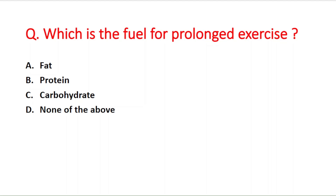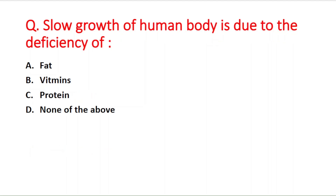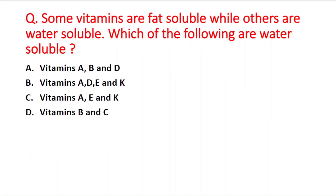Next question: slow growth of the human body is due to deficiency of — option A fat, B vitamins, C protein, D none of the above. The right answer is option C — protein.